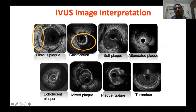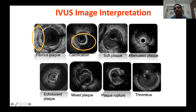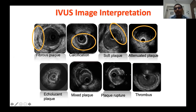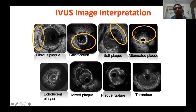In contrast, here you see a plaque that is hypoechoic compared to adventitia — that is called a soft plaque, most probably containing more lipid material. Two special types of soft plaque: first, attenuated plaque — an isoechoic plaque with deep signal attenuation. The second special type is echolucent plaque — a plaque with intra-plaque echolucency. These two types of plaque are very important determinants of slow flow or no reflow and periprocedural myocardial infarction during PCI.